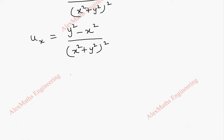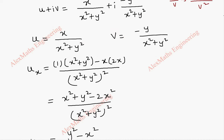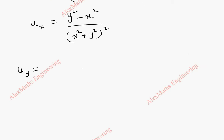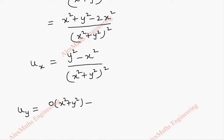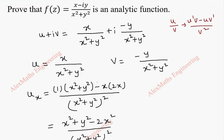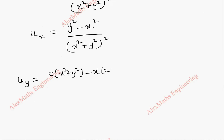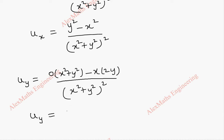In the same way, we find uy. Here, the differentiation of the numerator x with respect to y is 0. So u' into v is (x² + y²), and then minus uv' where v' = 2y (x² is constant). The first term is entirely 0, so uy = -2xy / (x² + y²)².